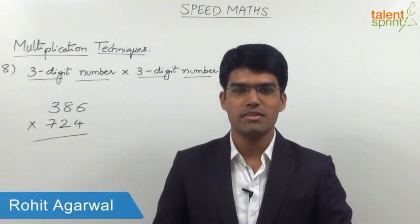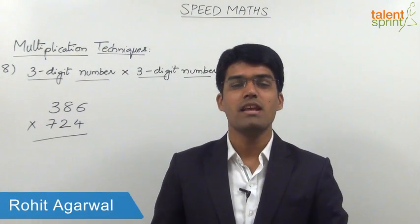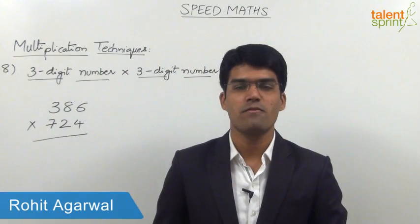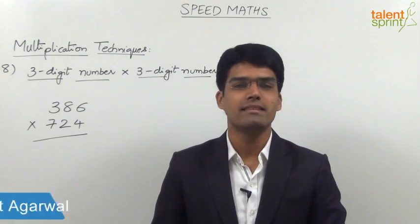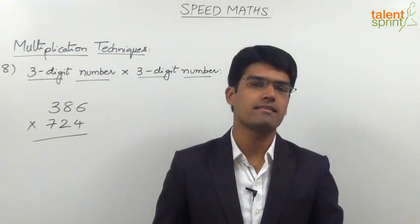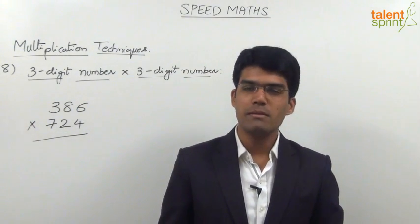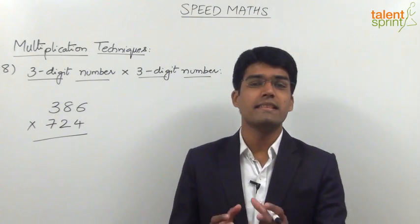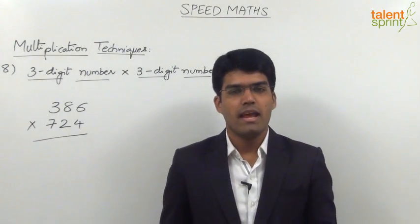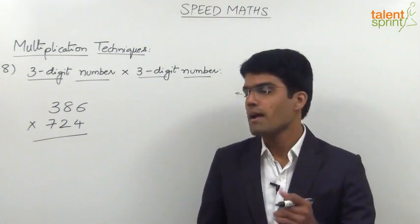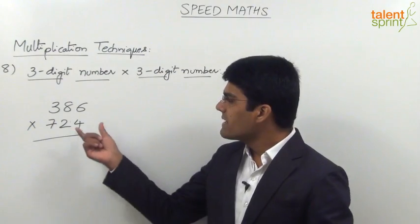Like two-digit multiplication, let us now see how to simplify the process of multiplying three-digit numbers. We very well understand that multiplication of three-digit numbers is a lengthy procedure and it takes a lot of time.